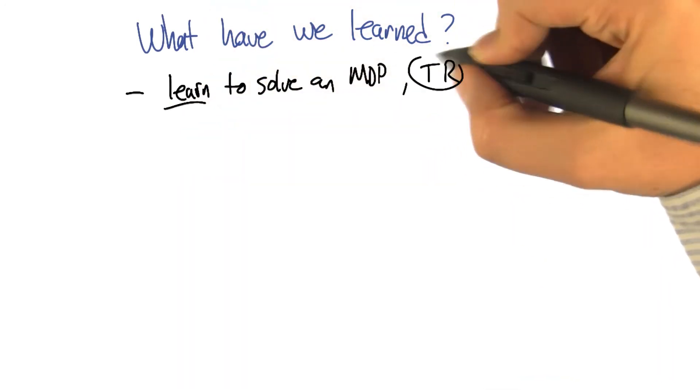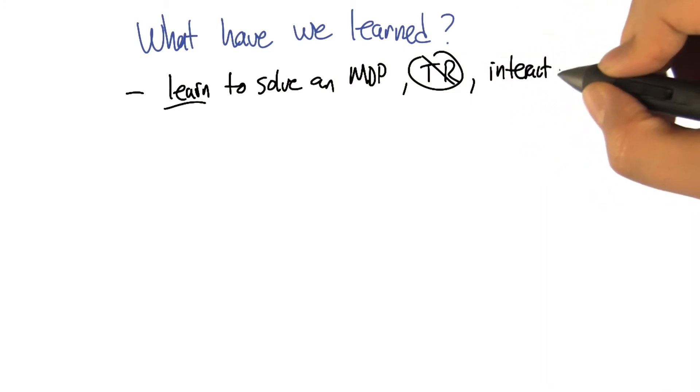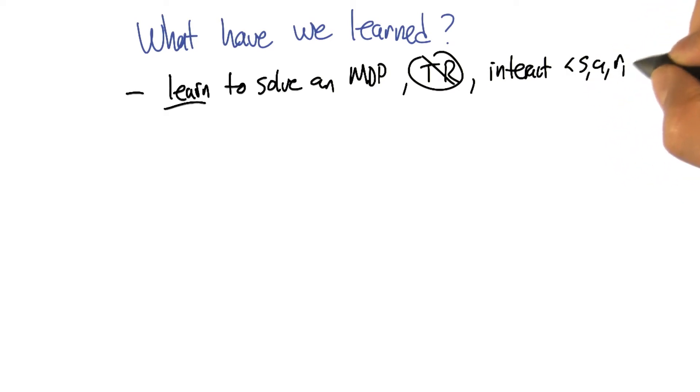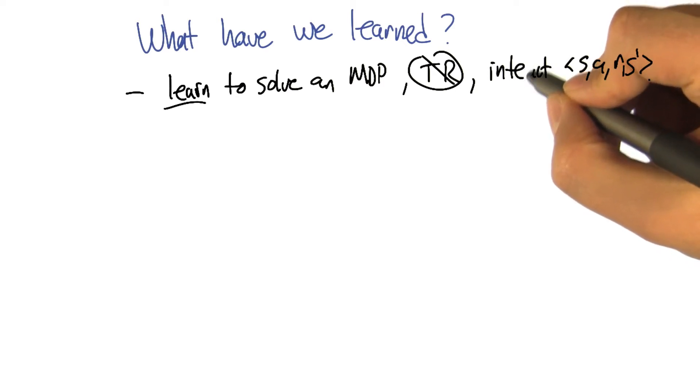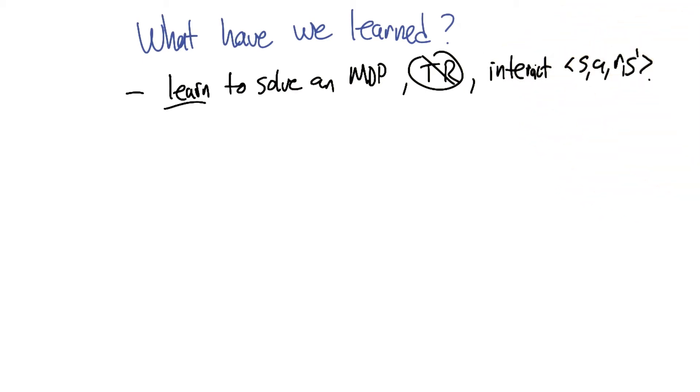Meaning that we don't know T and R, but we just have access to the ability to interact with the environment and receive transitions. And that's actually pretty impressive and a very powerful thing because if we assume the world is an MDP but we don't know T and R, if we don't have some way of learning, we really don't have much we can do. And you've shown me that there's something that we can do. I think that's the biggest thing.